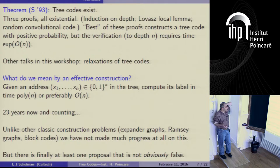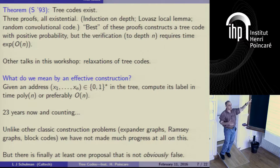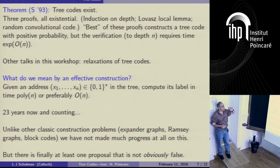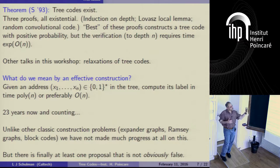Other talks in this workshop have focused on various relaxations. Ron mentioned potent tree codes, which succeed with very high probability. They're a little bit weaker but still sufficient for this application of the coding theorem. One interesting thing is that I don't know any strategy of proof or construction that might give a potent tree code that wouldn't just give a full tree code. That gap is sort of interesting.